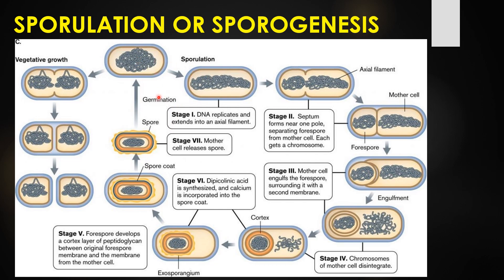In stage one, the DNA replicates and extends into axial filaments. In stage two, the septum is formed. The septum forms near one pole, separating the forespore from the mother cell.